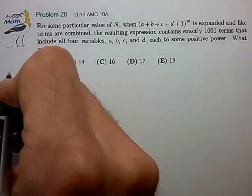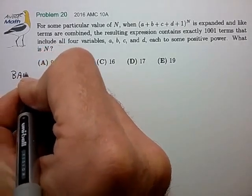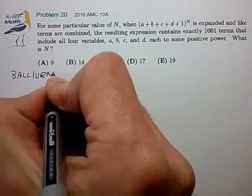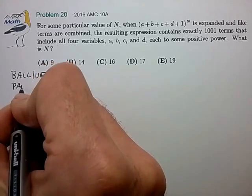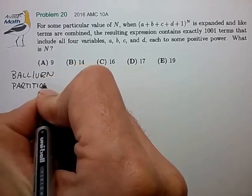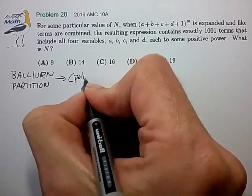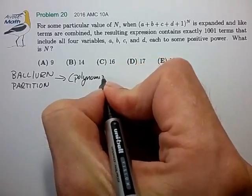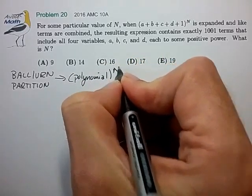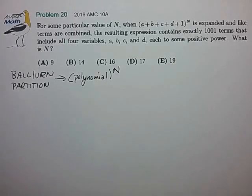So this turns out to be a ball and urn problem. Some people call it a partition problem as applied to a polynomial to some integer power n. If you've seen this problem pattern before, then you can probably follow what I'm about to say and you probably have a good chance of getting this problem correct.